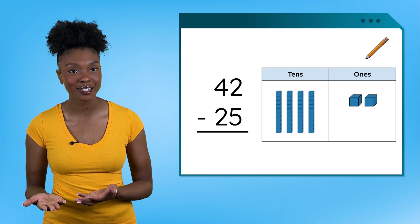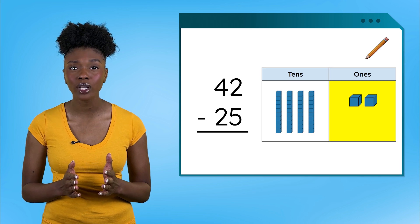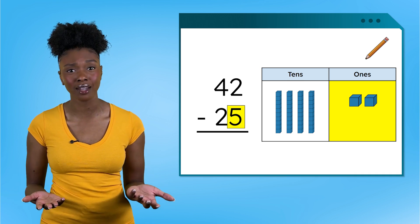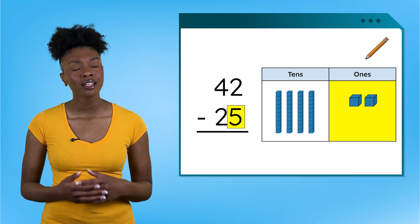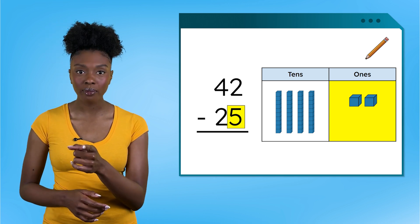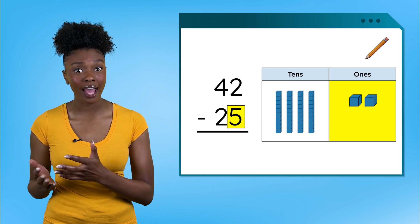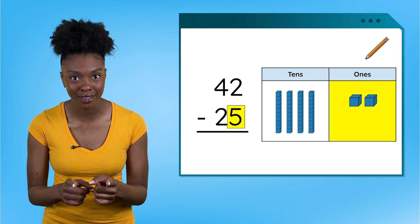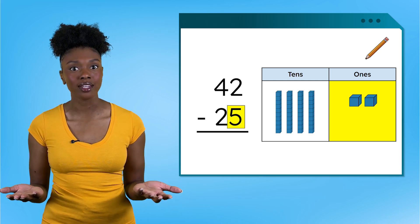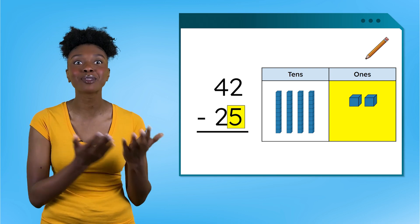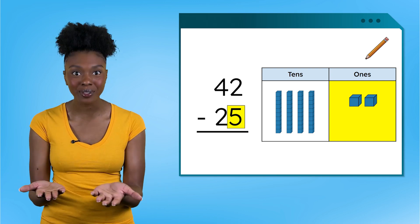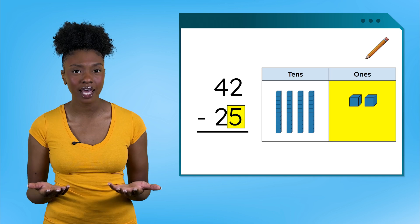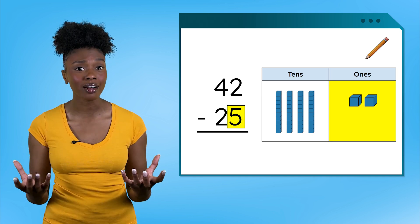Then we can start in the ones place. We have two ones, but we need to take away five — we don't have enough to take away our second number. Let's think back to our last quest. Remember regrouping? When we were adding, we had too many ones, so we would exchange 10 of them for a 10 block. This is the opposite though — we don't have enough. Addition and subtraction are inverse operations, or opposites. We need to do the opposite of what we did for addition. If we put blocks together in addition, we'll need to break them apart in subtraction.